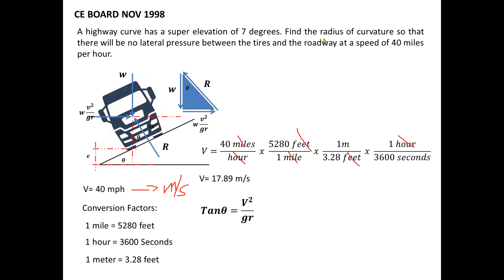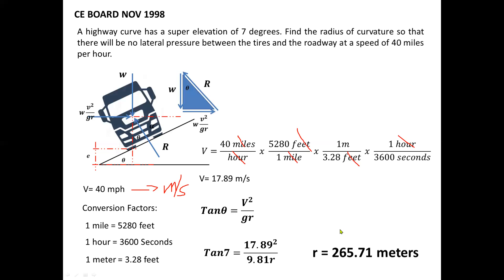Since what we need to find is the radius of curvature, and theta (the angle of embankment or inclination) is given as 7 degrees, we now have the velocity and the acceleration due to gravity, which is the constant 9.81 m/s². By direct substitution into the formula tan(θ) = V²/gr, we get: tangent 7 = (17.89)² / (9.81 × r). Solving for r gives us a final answer of r = 165.71 meters.